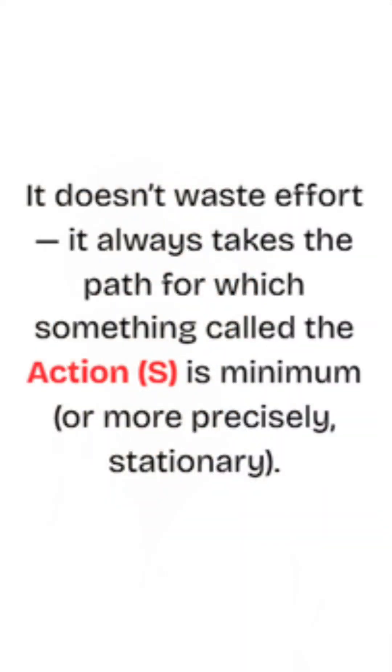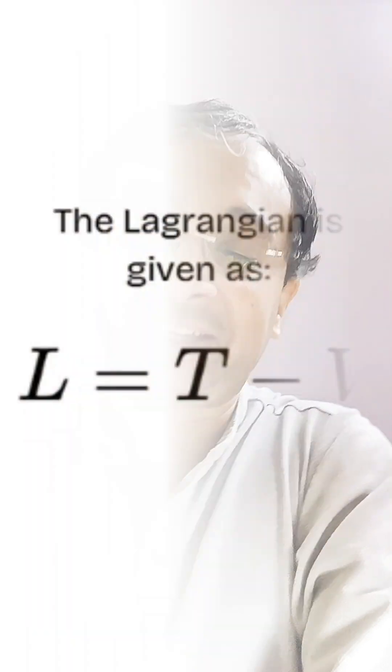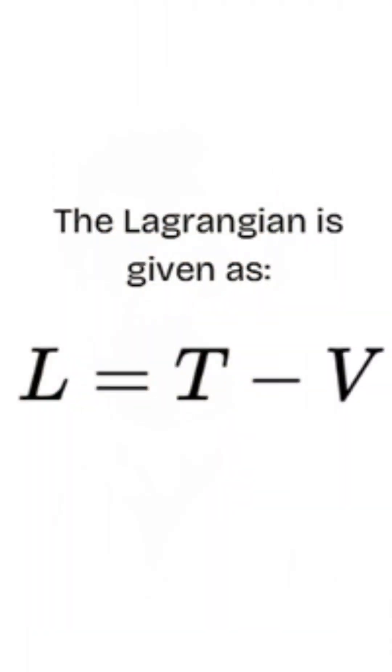This is beautifully laid out in the principle of least action, and the Euler-Lagrange equation is the mathematical heart. Nature is very lazy but also very smart, so it always takes the path that minimizes what is called the action. The action is defined as the total Lagrangian over time, where L is the Lagrangian, T is the kinetic energy, and V is the potential energy.